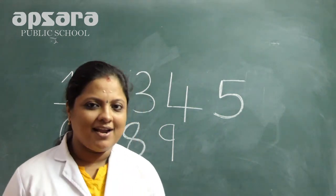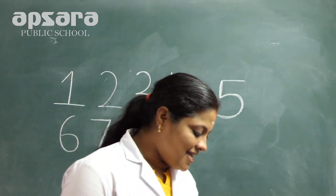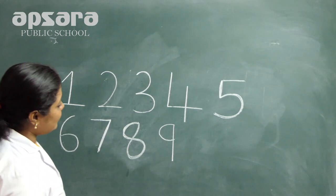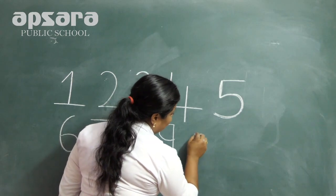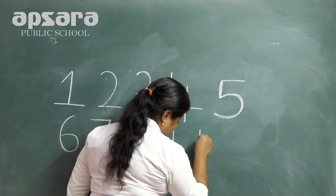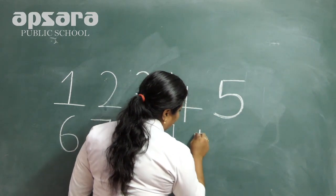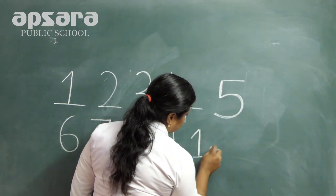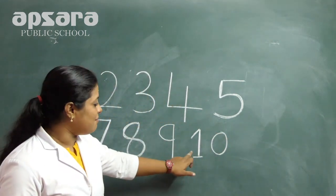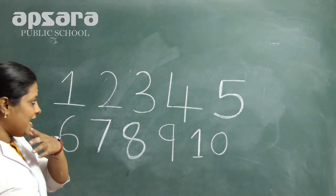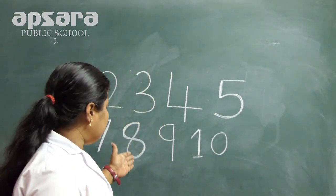Children, what is the next number? After 9, what comes? 10. Listen carefully — 10 comes with 1 and 0. Which number is this? 10. You already learned how to write 1 through 10.